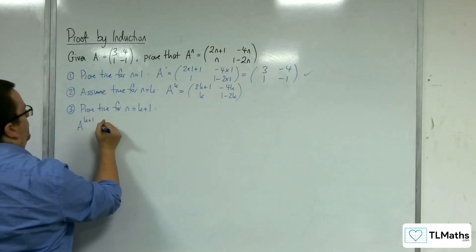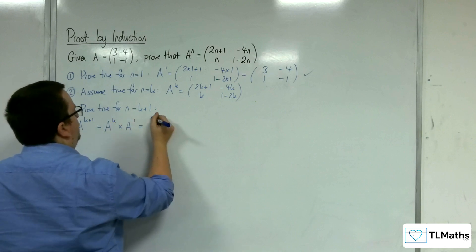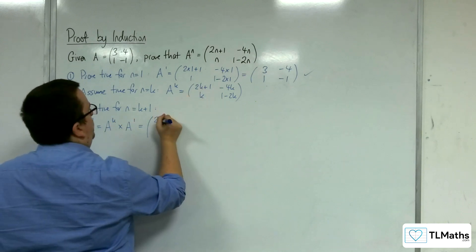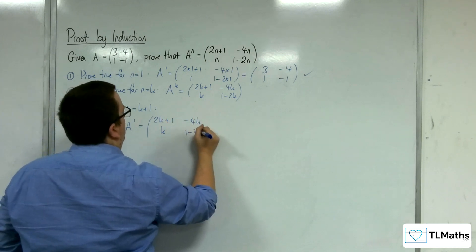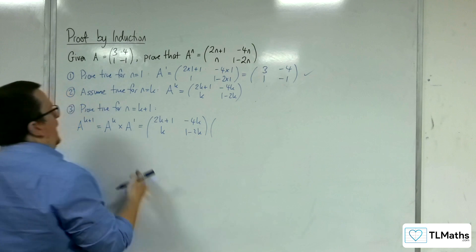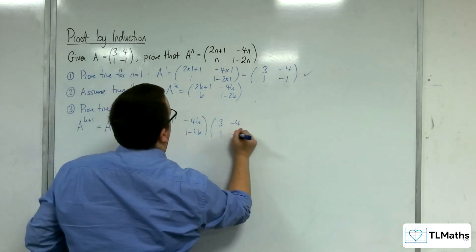So A to the k plus 1 is A to the k times A to the 1. A to the k is this (2k+1, -4k; k, 1-2k), and A to the 1 of course is just (3, -4; 1, -1).